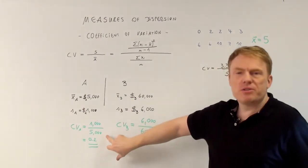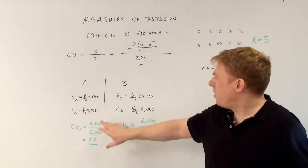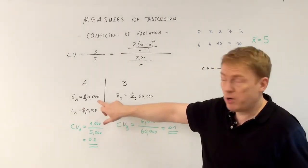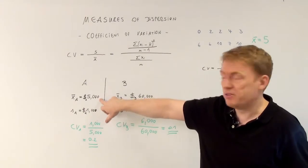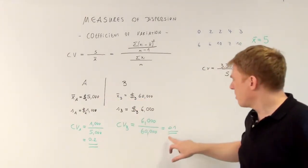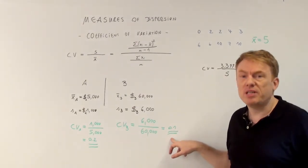So as we compute the coefficient of variation here, $1,000 standard deviation divided by the arithmetic mean divided by $5,000 gives us 20% of country A, whereas it is only 10% in country B.